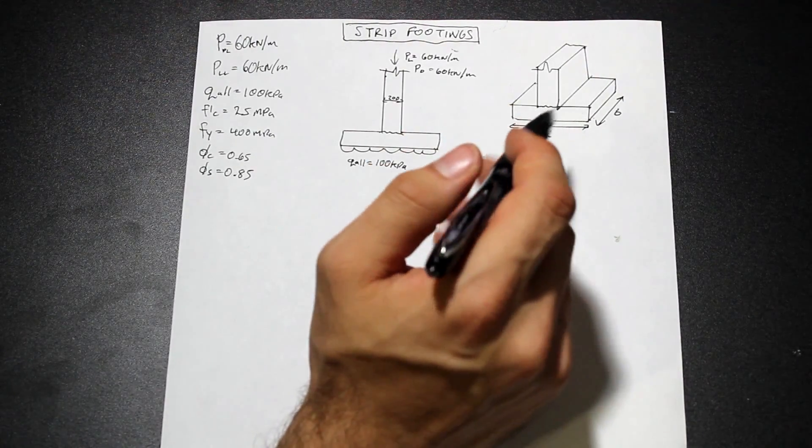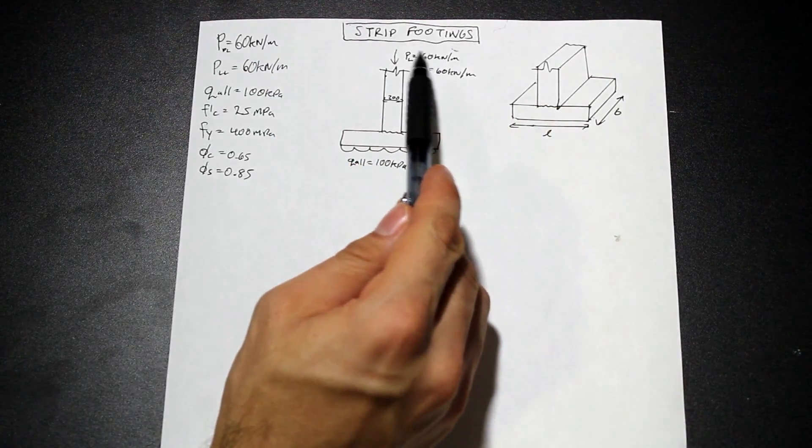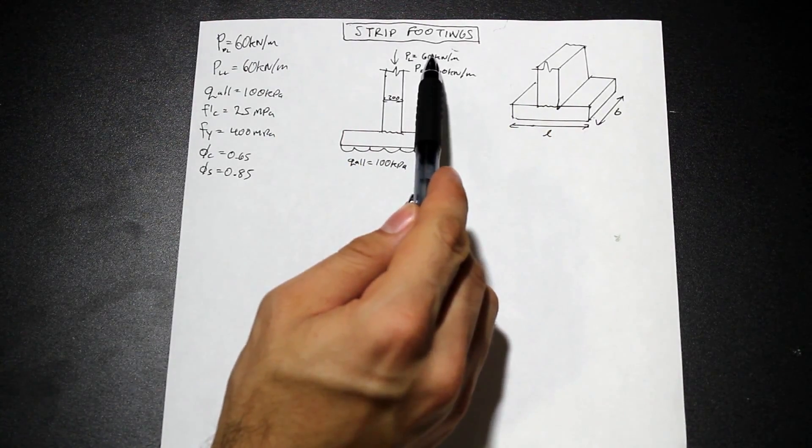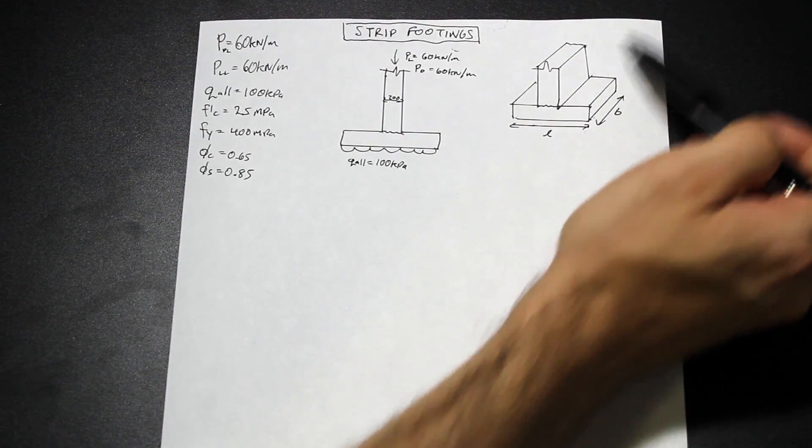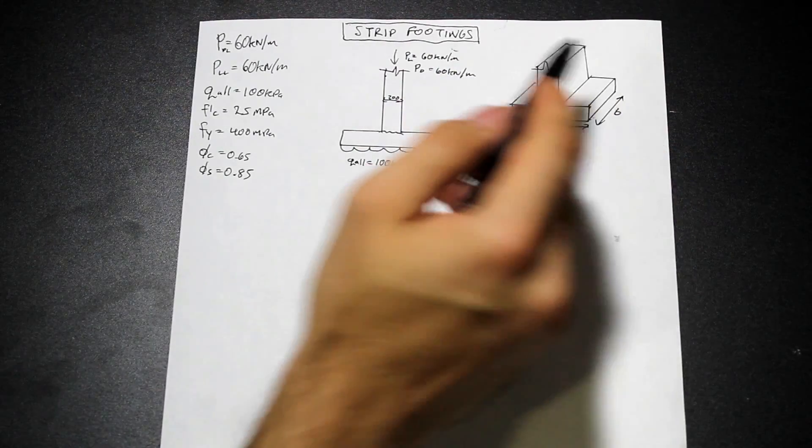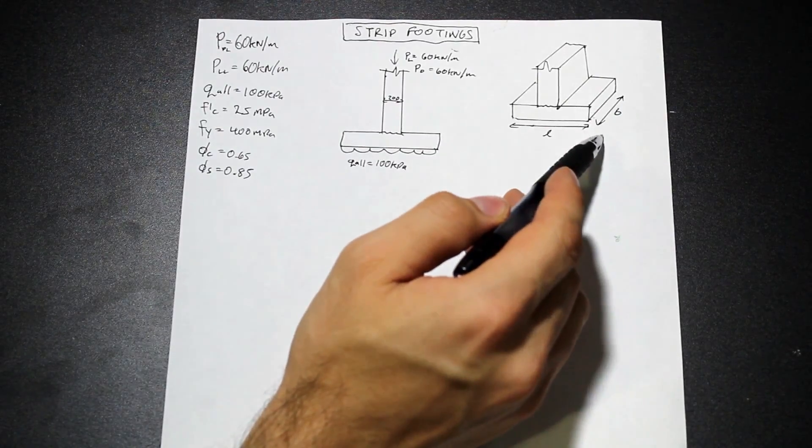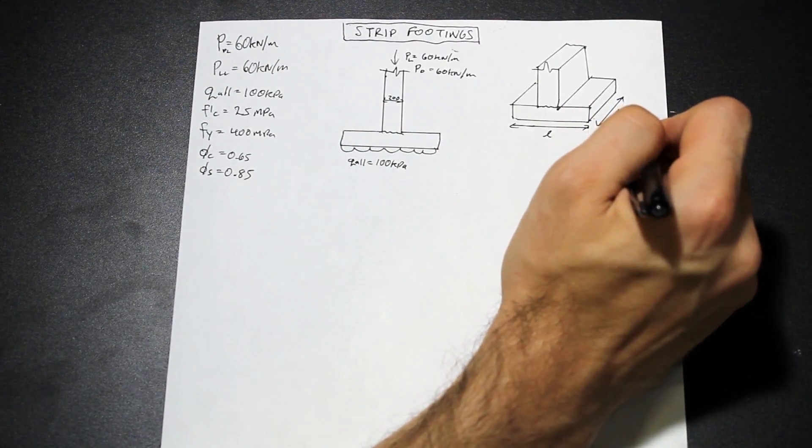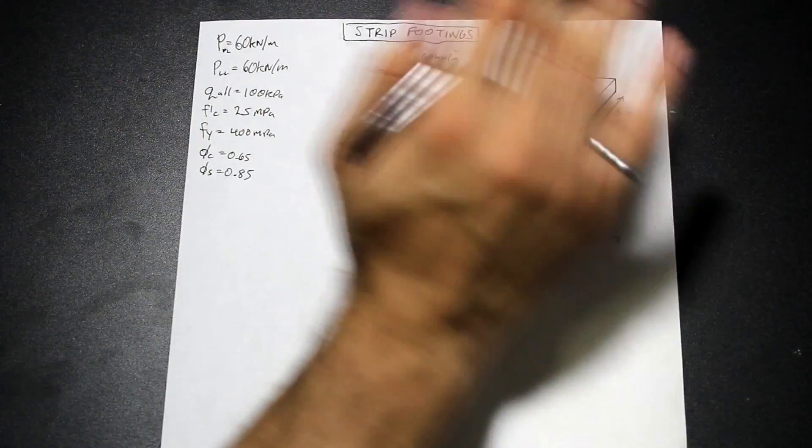We'll probably break this up into a couple of videos. This might be a little long. So what are we given? We're given the forces, specified loads, and they're line loads. Because if you think about this, this is a strip footing. It could be going for 10, 15, 20 meters. But because it acts one way, we're going to be designing it as a one meter strip. So this B is equal to one meter. And most of the load is going to be going in this direction, the short direction.